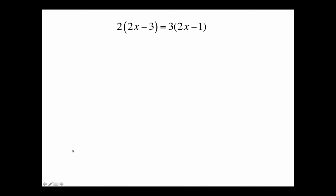This video focuses on checking your answer with the end solve command. So we need a problem: we have 2 times the quantity 2x minus 3 equals 3 times the quantity 2x minus 1. We distribute the 2 and 3 through.